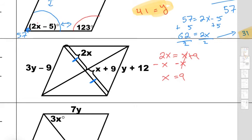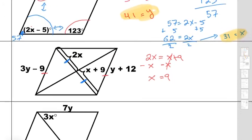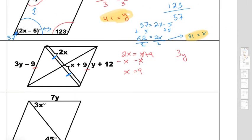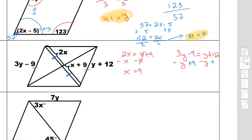Second thing, to find y. We approach it the same way — opposite sides are congruent. They're giving you one side as 3y minus 9, and the other side as y plus 12. We subtract y from both sides and add 9 to both sides. The y terms cancel out, so 3y minus y gives 2y, and 12 plus 9 gives 21. So 2y equals 21; divide by 2, and we get y equals 21 over 2, or 10 and a half.